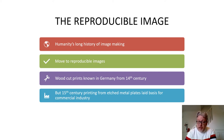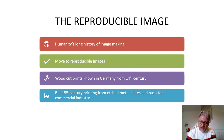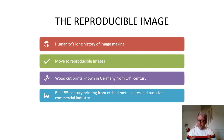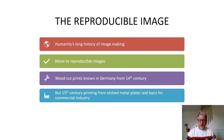That doesn't just start with the printing press — it's actually around about 100 years before, in the 15th century. Woodcut prints were known in Germany from the 14th century and in other countries in Europe as well. In the 15th century, printing from an etched metal plate — the printing press — laid the basis for a commercial industry in the reproduction of images to be consumed as a form of media.